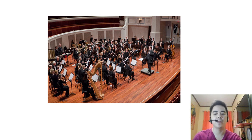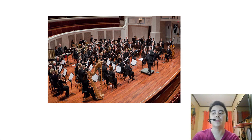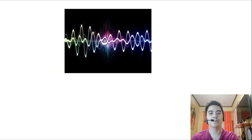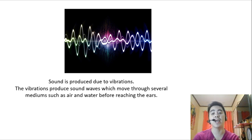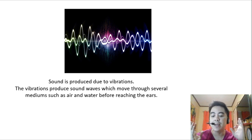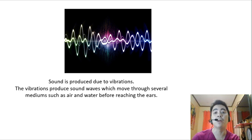We have here an example of an orchestra, which is composed of different musicians playing different musical instruments, and it produces different sounds or music. Sound is produced due to vibrations. The vibrations produce sound waves which may move through several mediums such as air and water before reaching the ears. Our ears vibrate in a very similar way to the original source of vibration, which allows us to hear the different forms of sound.